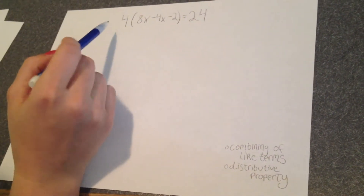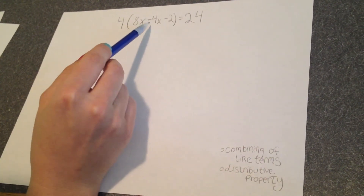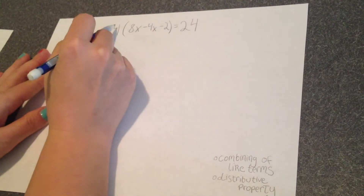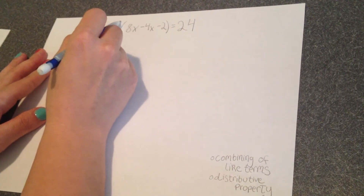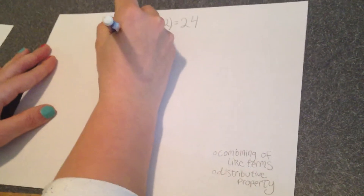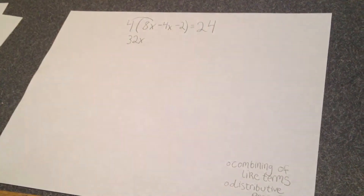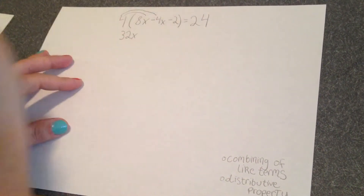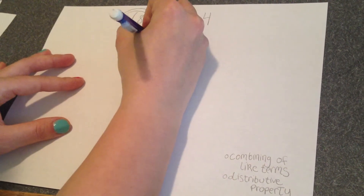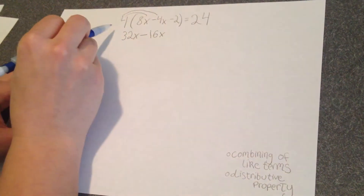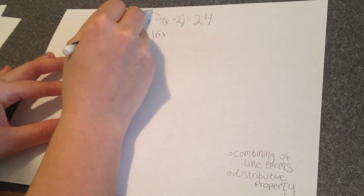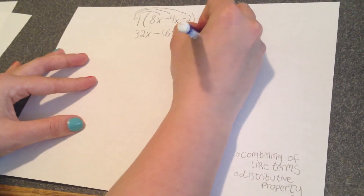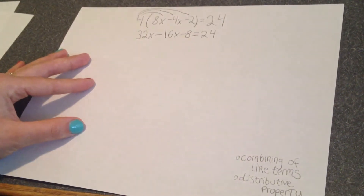Our next problem is 4 times the quantity 8x minus 4x minus 2 equals 24. Our first step is always to distribute the number on the outside. So 4 times 8x gives us 32x — make sure you don't just write 32, because that would be wrong. Then 4 times negative 4x gives us negative 16x. Our last term: 4 times negative 2 gives us negative 8. Equals 24 — always bring down what you have on that side of the equal sign.